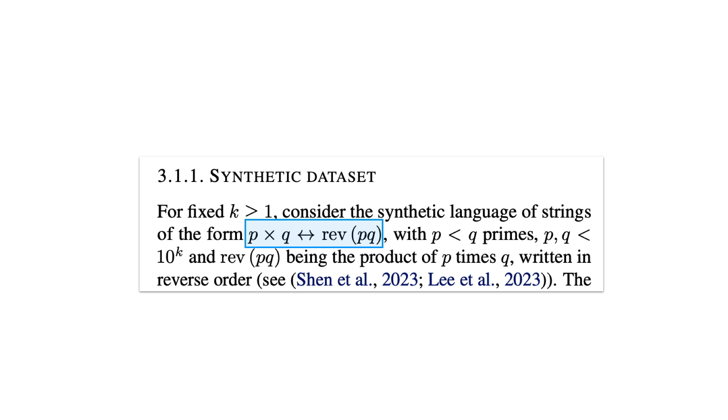Here's a simple toy setting the authors give as an example domain where a backwards model is subject to these difficulties. They take primes p and q, and generate sequences with the string p times q on the left and the resulting product on the right. So here, going forwards involves a multiplication step, but going backwards involves prime factorization, which of course is believed to be more computationally challenging in general.